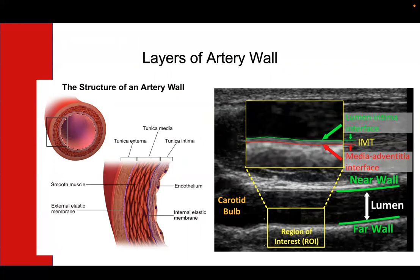This inner coat is made up of a single layer of cells called the endothelium, and then there's some loose connective tissue. The next layer is called the middle coat or the tunica media, and it's mostly made up of smooth muscle.